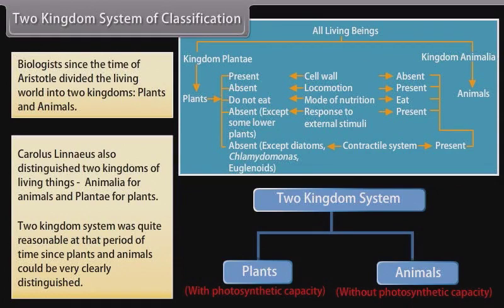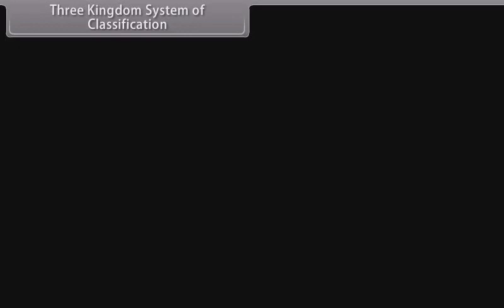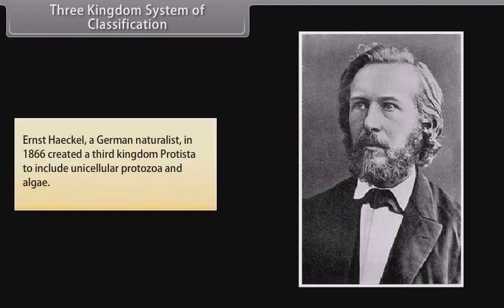Three kingdom system of classification: Ernst Haeckel, a German naturalist, in 1866 created a third kingdom, Protista, to include unicellular protozoa and algae.